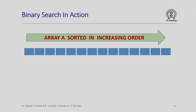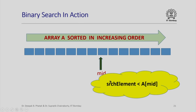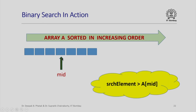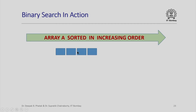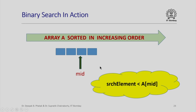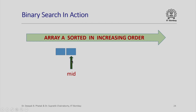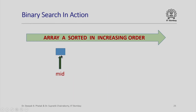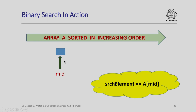This technique of dividing the array into halves and using a comparison to determine which half to search in is called binary search. Here is a simple animation. With array a sorted in increasing order, I find the midpoint. If the search element is less than the mid value, the second half is eliminated. I find the new mid of the first half; if the search element is greater, the first half of that portion is eliminated. I continue halving until one element remains and either matches or does not.